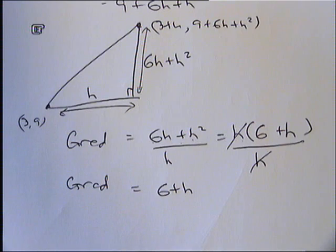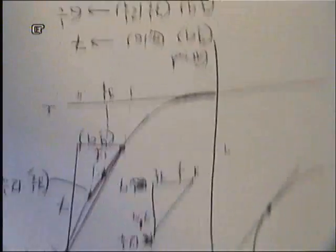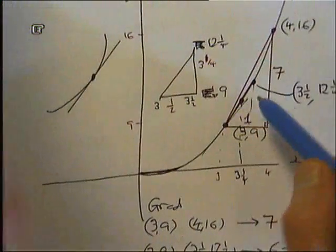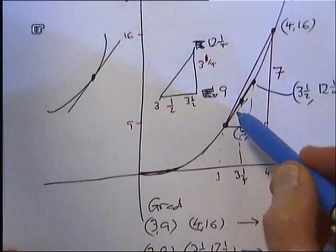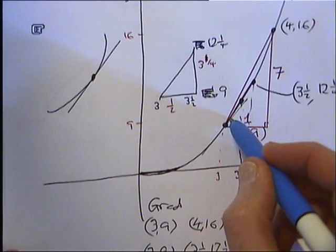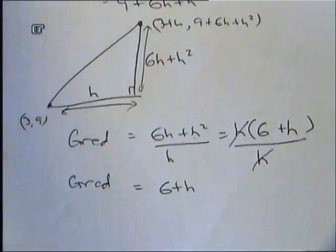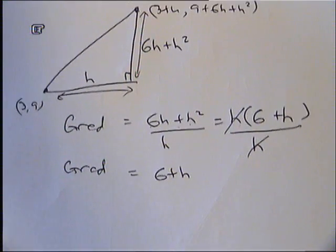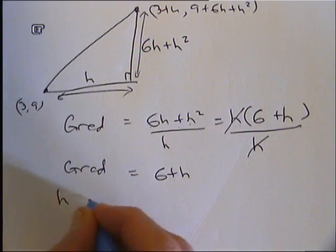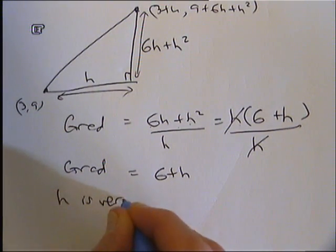So I've got the gradient of this line is 6 plus h. Go back to our original drawing for a minute. Those of you in the class, that will appear back in a minute. What I have done now is I've brought this point here down here so it's just a very small bit of x different. And I've called that small bit h and I've got the gradient of that line is 6 plus h. And remember, we said h is a very, very small amount.